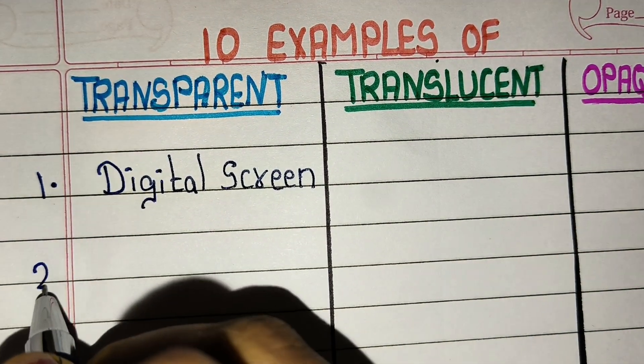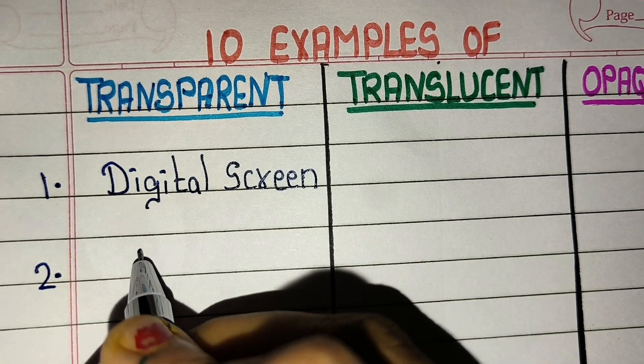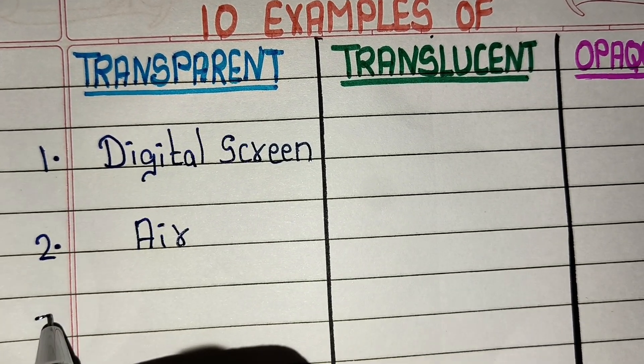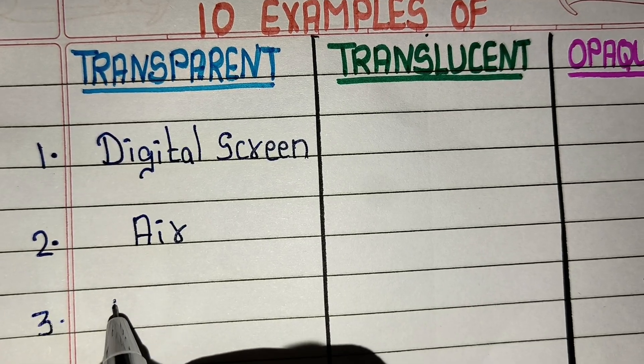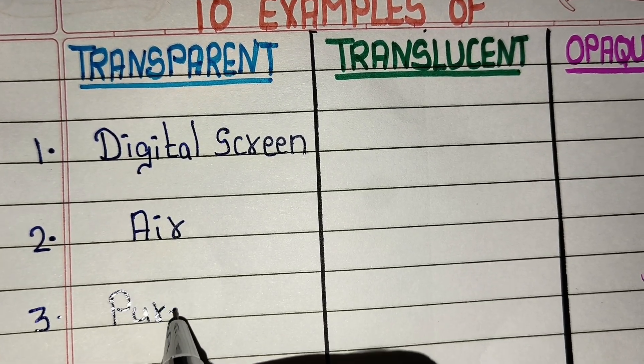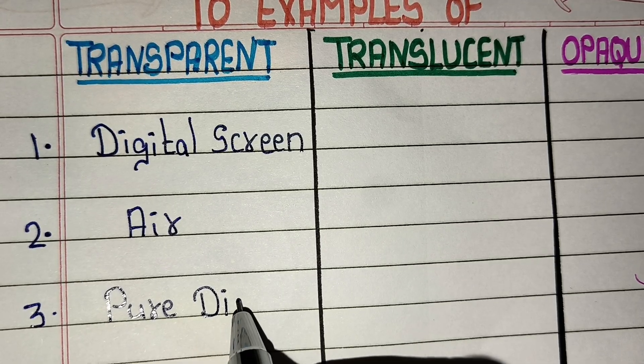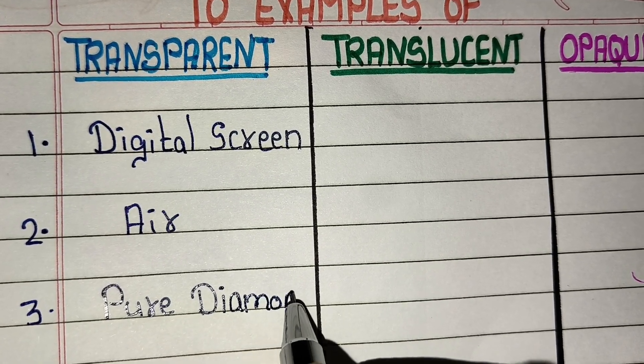Now let's start examples. In transparent, examples like digital screen, air, pure diamond.